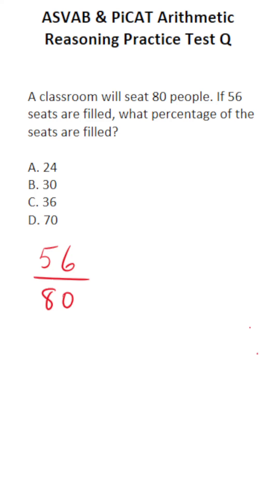So to convert this to a decimal, the first thing we want to do is reduce this fraction as much as possible. And you should see that 56 and 80 have a common factor of 8.